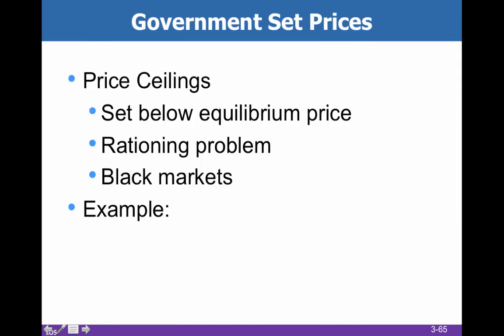The next thing we'll discuss are what we call price ceilings or price floors. These are situations where the government sets prices — they're pretty rare in the United States. In a price ceiling, the price is set below the equilibrium price. It is a cap — you're not allowed to charge more than a certain amount. What's going to happen is black markets will develop.